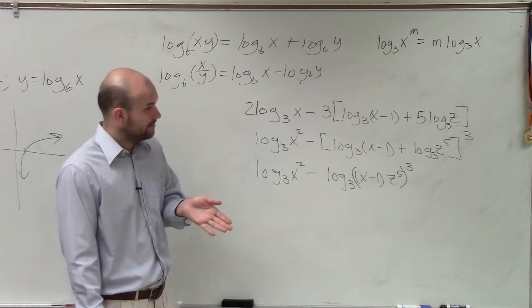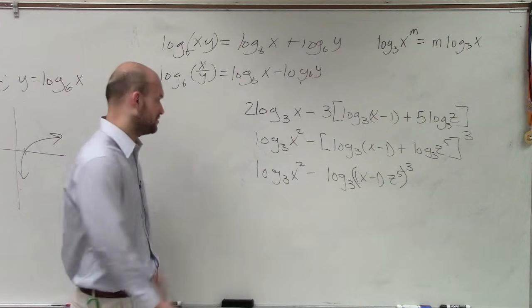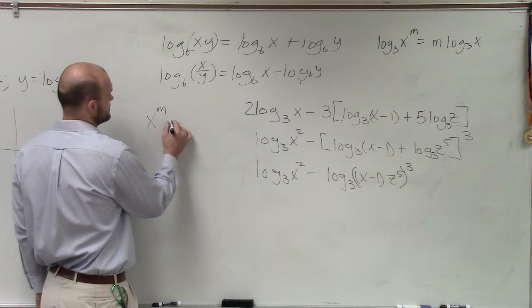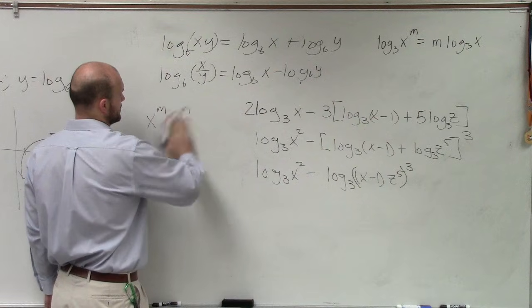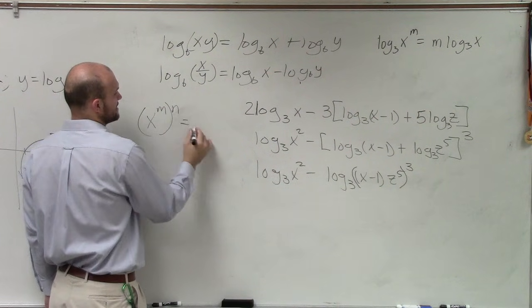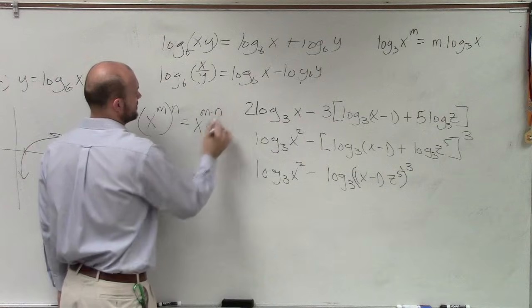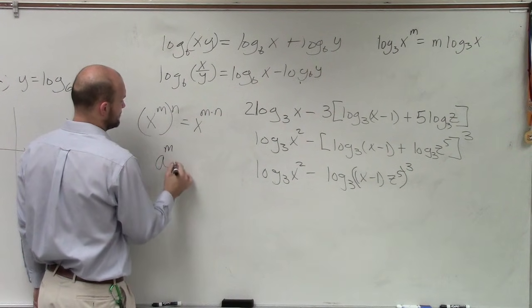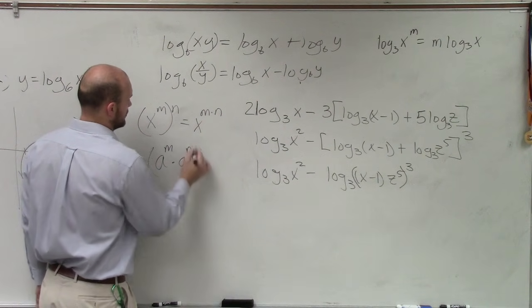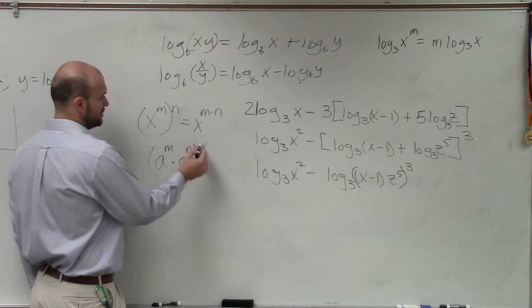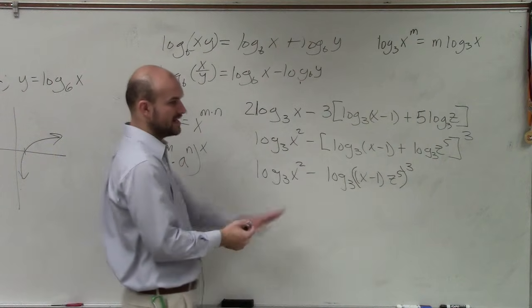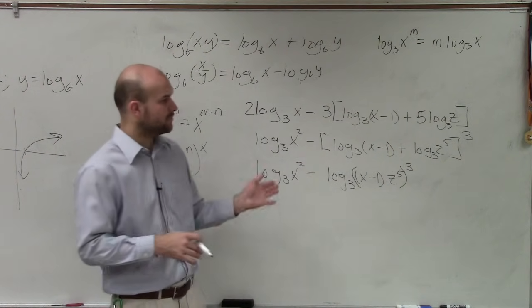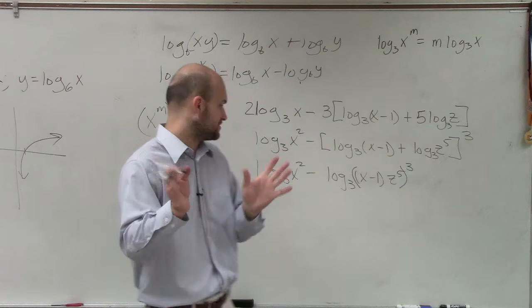You don't add them, but remember, you multiply. x to the m times x to the n. Oh, I'm sorry, that's adding. Yeah, x to the m times x to the n is x to the m plus n. And then also, a to the m times a to the n raised to the x, you distribute that to each one. So yes, this would be x minus 1 cubed times z to the 15th, which I'll get to in a second.